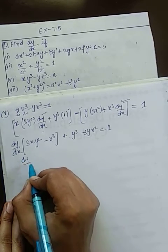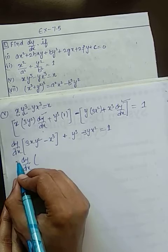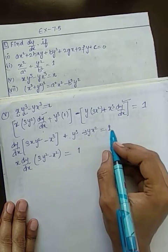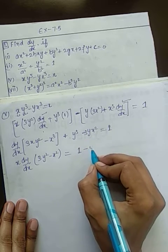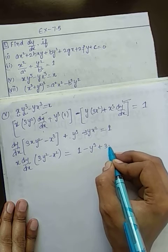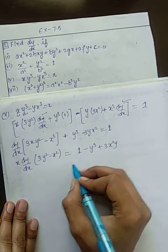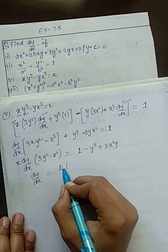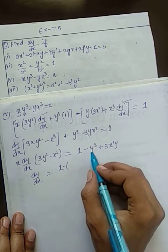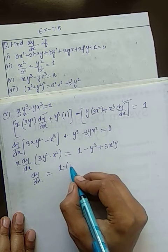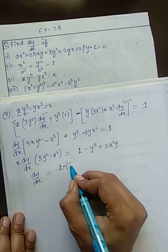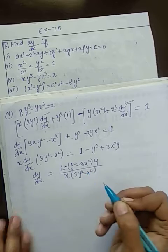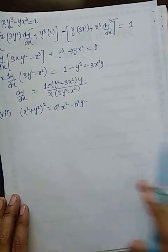Hame dy/dx common lelenge to yeh kitna bachega: 3xy² minus x³. Ab without dy/dx terms: minus 3yx² = 1. Or you can say dy/dx common le lete, left hua 3y² - x³ = 0. And you have y³ - 3x²y. So dy/dx = (1 - y³)/y upon (3y² - x³). Or taking y common from denominator, it will be y²(1 - 3x²/y) upon x(3y² - x²).